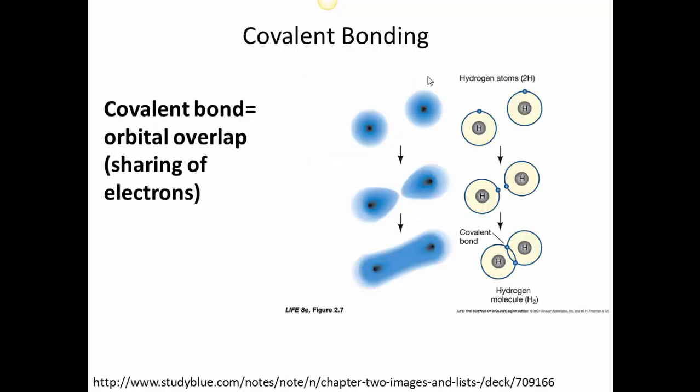In covalent bonding, you have orbital overlap to create a covalent bond where you're sharing electrons. So we've talked about how orbitals are really just wave functions, and we can determine the probability of the electrons by squaring the wave function. So if these orbitals can overlap in a constructive manner so that we have constructive interference, then we can create a covalent bond where now we have more probability of electron density between the two atoms than we would otherwise.